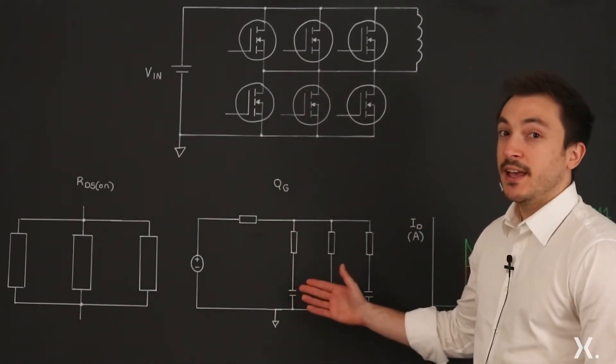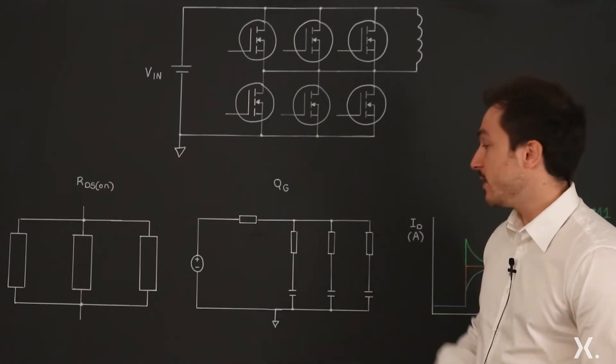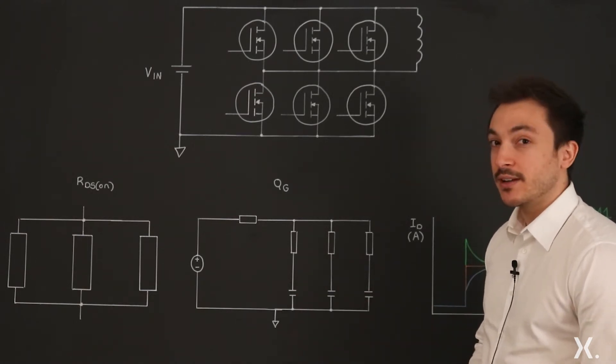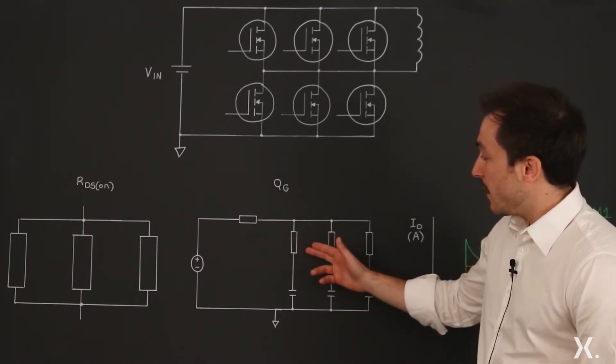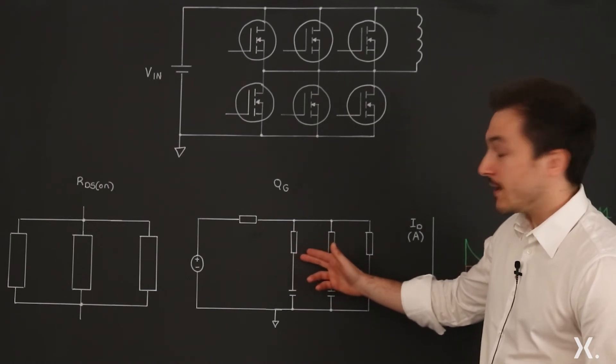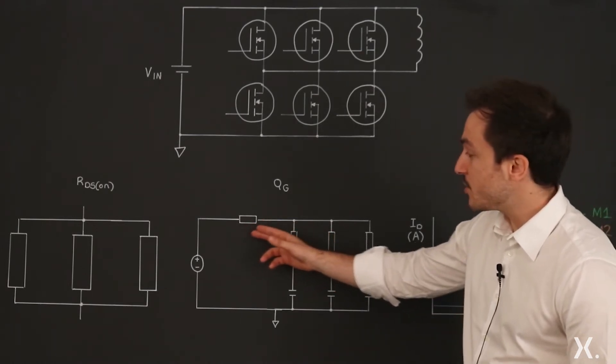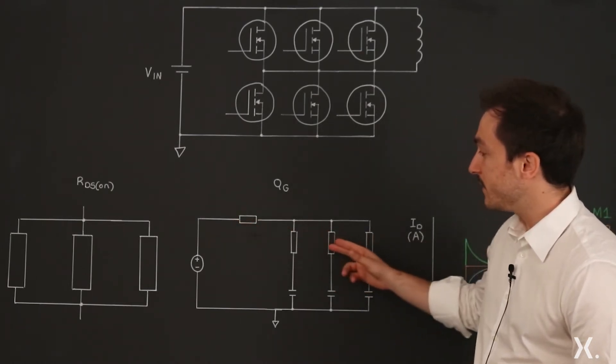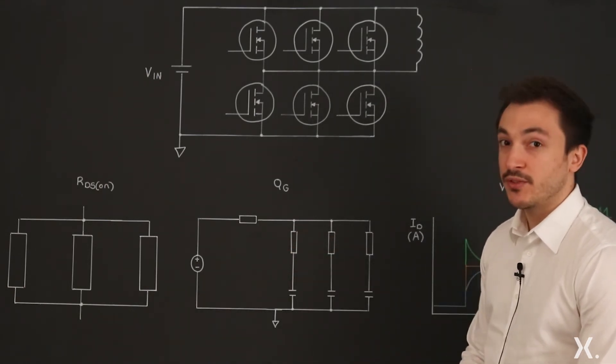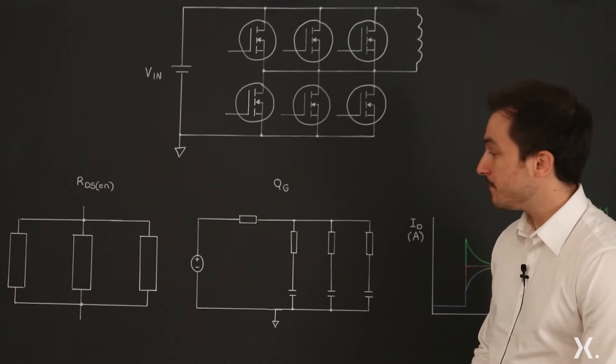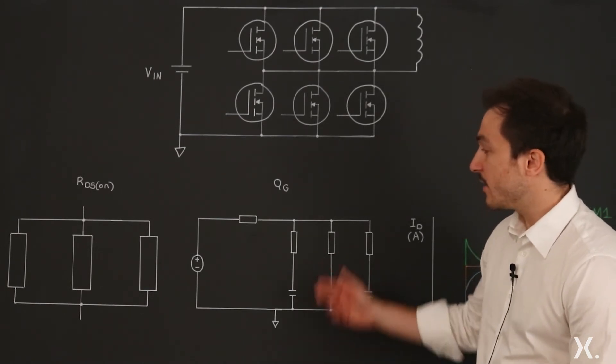Input charge has more influence on current sharing, mainly during switching. However, this can be counteracted effectively by splitting the gate resistance between one smaller resistor at the MOSFET side and one larger resistor common to the three MOSFETs at the driver side. By doing this, the operation of the MOSFETs will be synchronized and they will share current evenly.